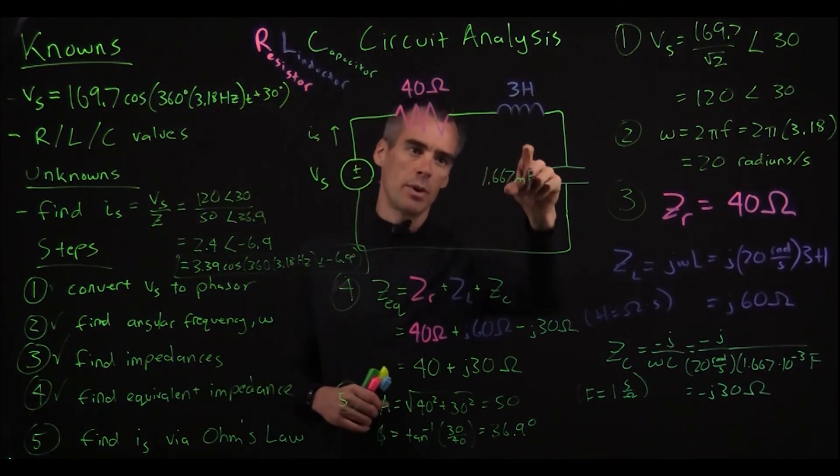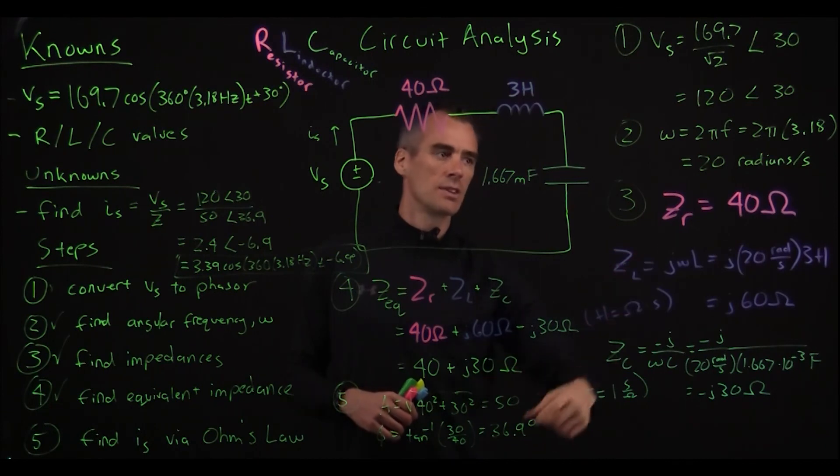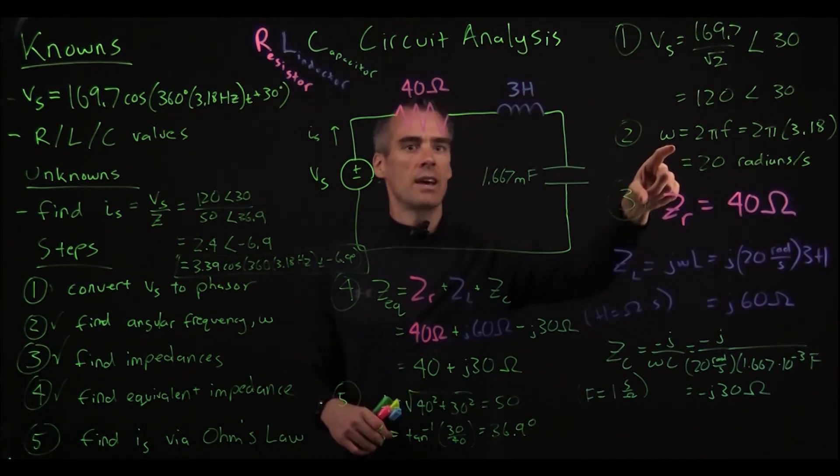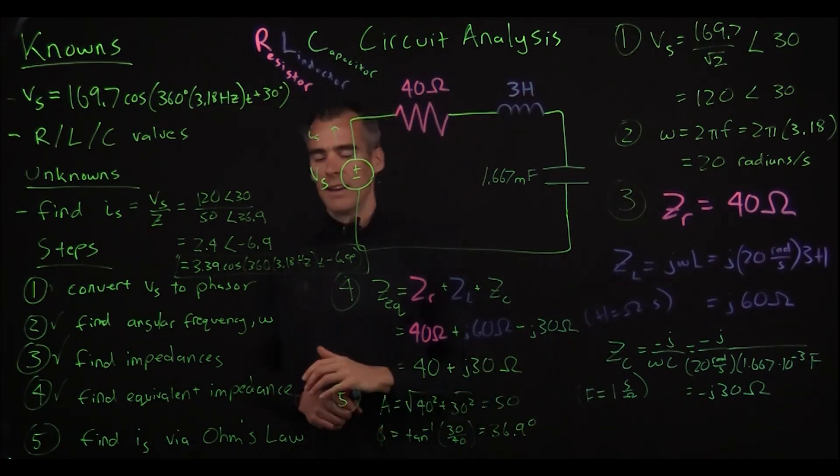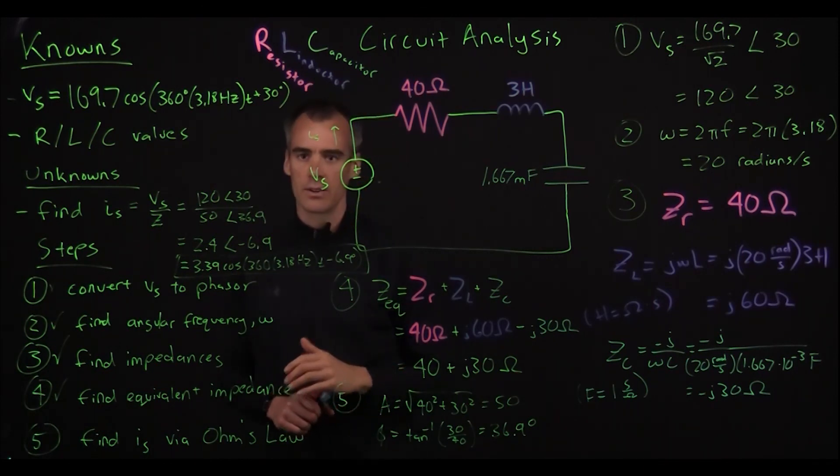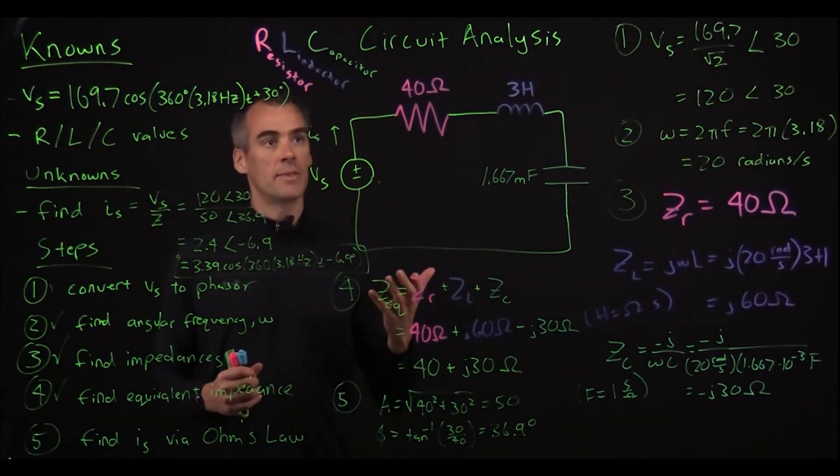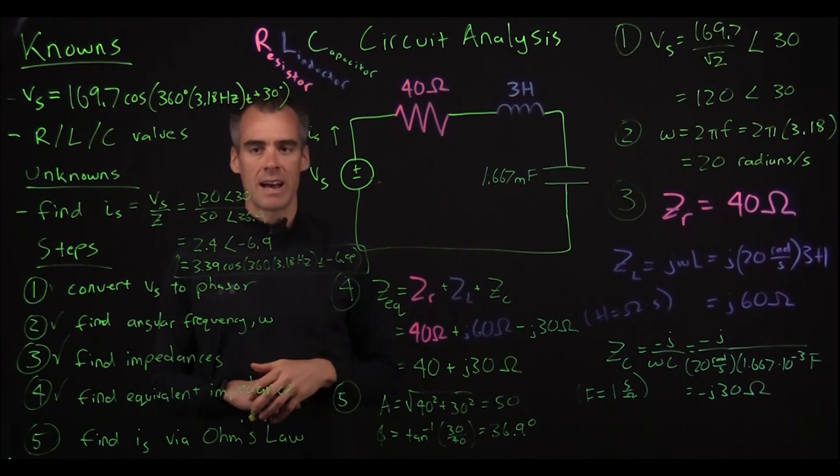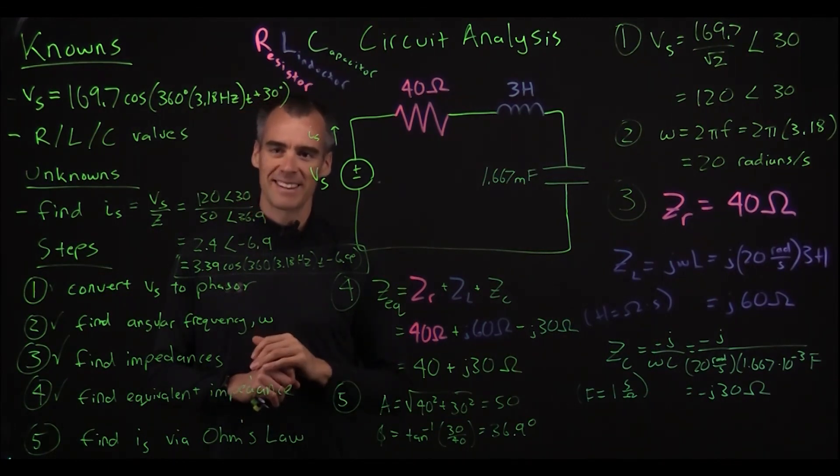And that is how we find our current here by Ohm's Law with our voltage source and our total impedance is the addition of all these components which are found by all these equations based on this angular frequency that we found. And that's how you solve this certain type of RLC circuit analysis problem. So hope it was helpful, and until next time, take care.